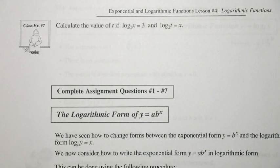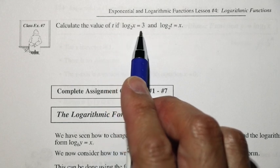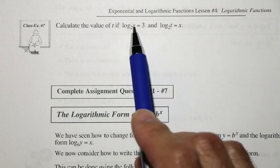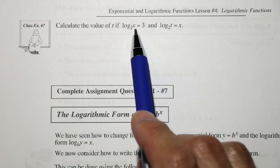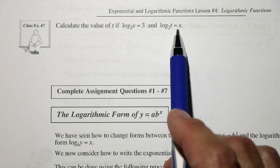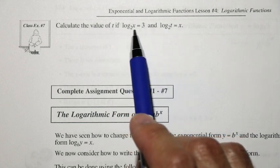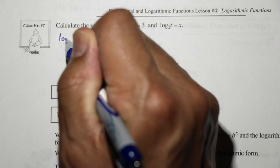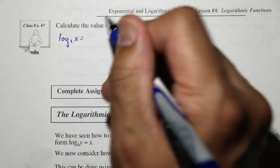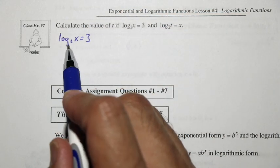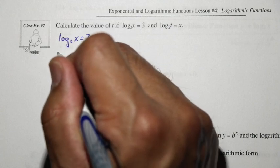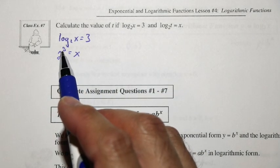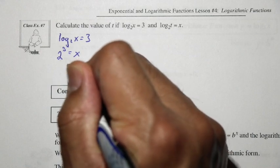Let's take a look at class example 7. We're going to calculate the value of t if log base 2 of x is equal to 3 and log base 2 of t is equal to x. Looking at these two equations, in one case we have only one variable. We can start with the first equation: log base 2 of x equaling 3. Changing this into exponential form, base 2 raised to exponent 3 is equal to x, so 2 cubed equals x, meaning x is equal to 8.